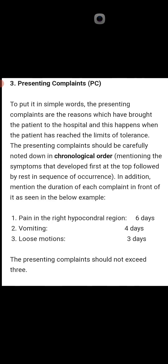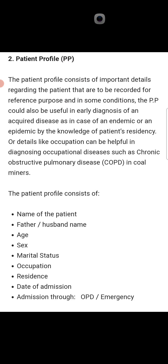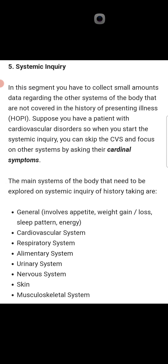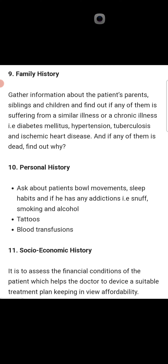The next step in the history sheet is personal history. In personal history, ask about addiction and quantity consumed per day, blood transfusion, and tattoos. In detail, ask about bowel movement, sleep habits, and any addictions like snuff, smoking, and alcohol, as well as tattoos and blood transfusions.